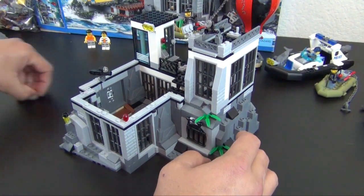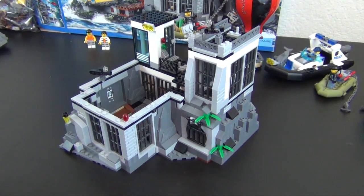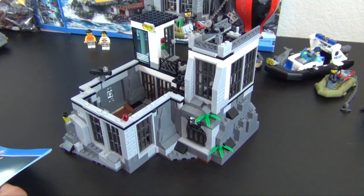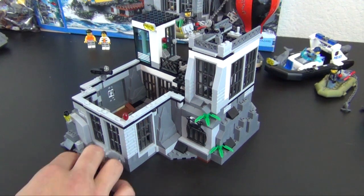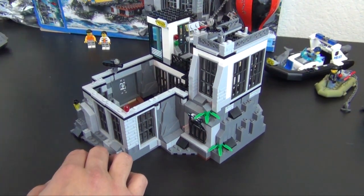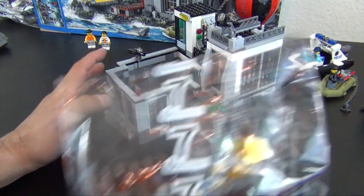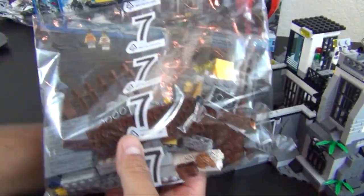So it's coming together. That completes bag six. Let's move on to bag... I'm sorry, that completes bag five. Now we're going to move on... Wait, six. Yeah. I was looking at the instruction books. That completes instruction book five, bag number six. So now we're on bag number seven.